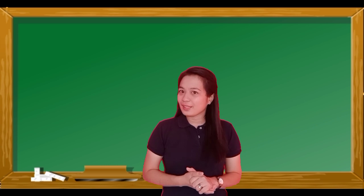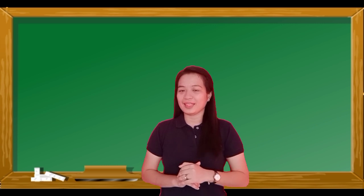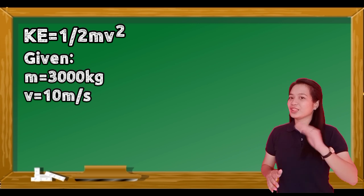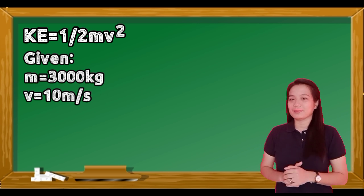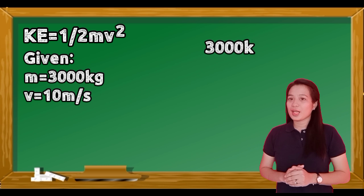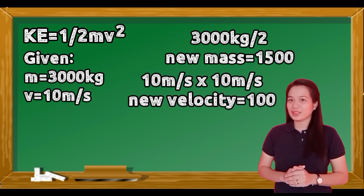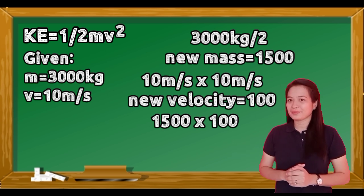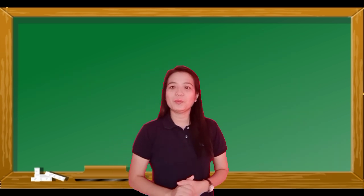Now, what if we increase the mass instead and keep the velocity at 10 meters per second, but the mass becomes 3,000 kilograms? Our mass has doubled to 3,000 kilograms and velocity is 10 meters per second, as in the first problem. One half of 3,000 kilograms is 1,500 kilograms, and 10 times 10 equals 100. So 1,500 times 100 equals 150,000 joules — that is our new kinetic energy.